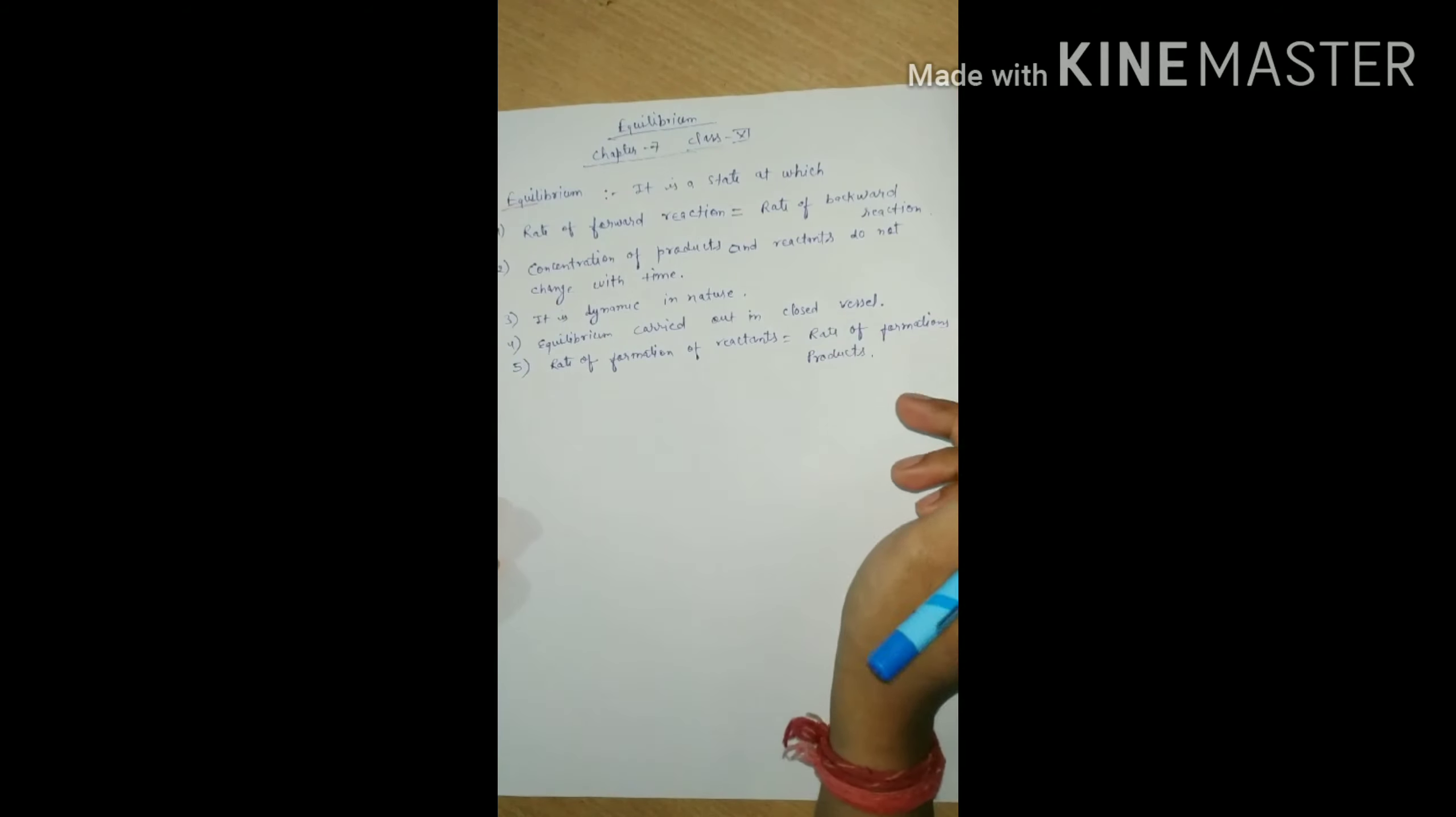So one by one we will study each topic. First of all, talk about the physical equilibrium. As you can see, physical means there is change in physical state. So physical equilibrium examples are phase transformations in which phase is transforming from one phase to another phase.